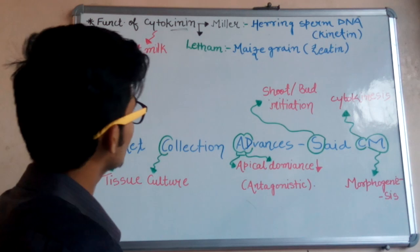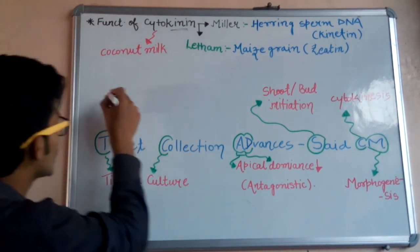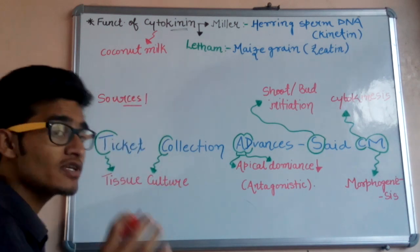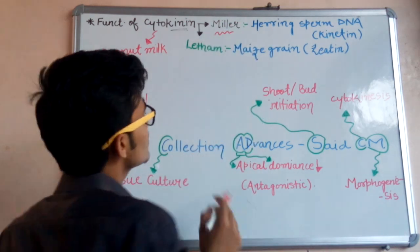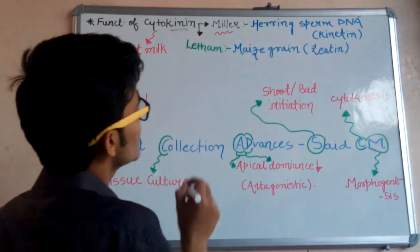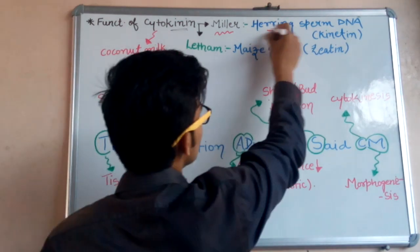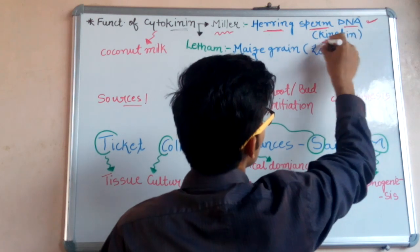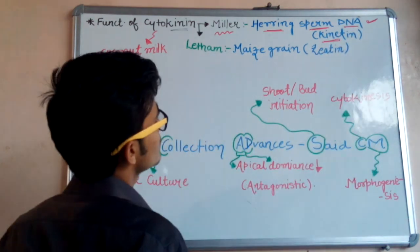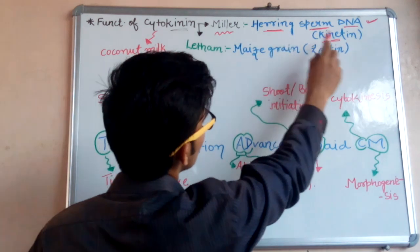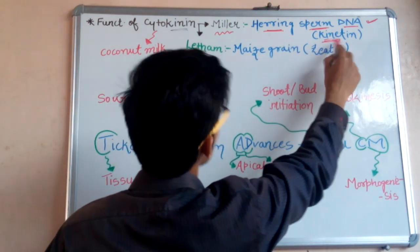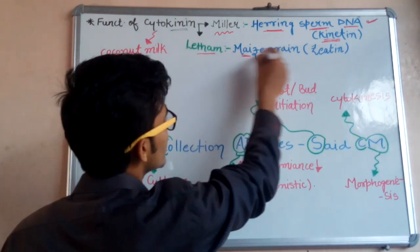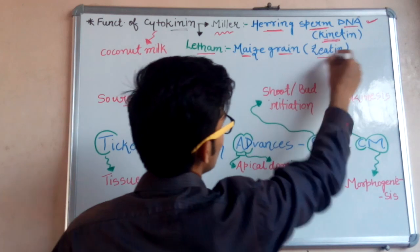Cytokinins are a group of plant hormones which are discovered by different scientists from different sources — this is a very important point. For example, Miller is a scientist who discovered cytokinins from herring sperm DNA. This forms a very important exam question. The cytokinin discovered from herring sperm DNA is known as kinetin. So Miller discovered kinetin from herring sperm DNA.